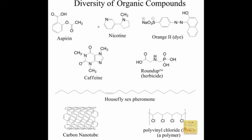Nicotine is the component in cigarettes that makes it so addictive. Caffeine — you can see a lot of drugs have nitrogens in them with a lot of reactivity we'll study throughout organic chemistry. There's also a compound called Orange 2, used as a dye. Having a large network of double bonds one right after another — a conjugated pi system — interacts with light in such a way that we perceive them as colored; they reflect certain colors of the spectrum. That's an example of an organic-based pigment.